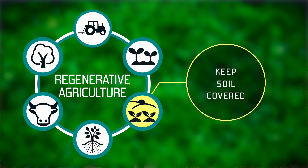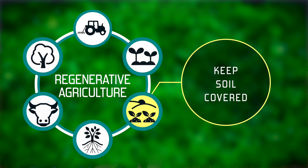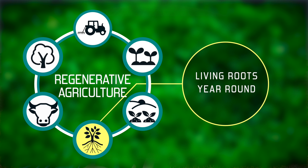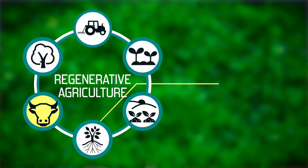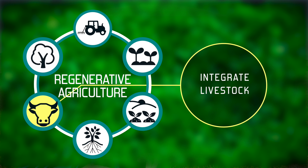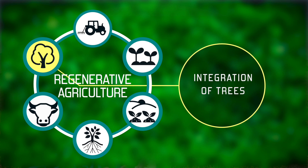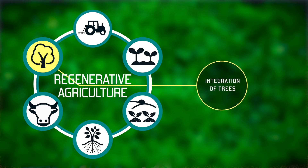The third principle is about maintaining ground cover. The fourth principle is about maintaining living roots year round. The fifth principle is integrating livestock on the farm, and the sixth principle is integrating trees — and we'll talk about each of these as we go through.